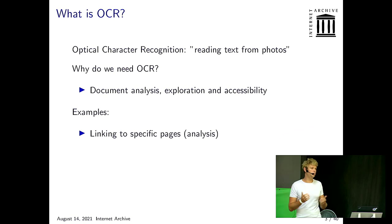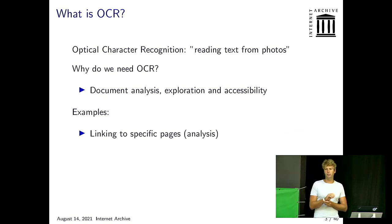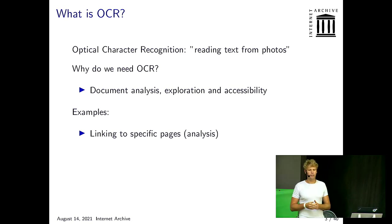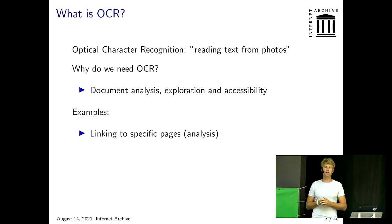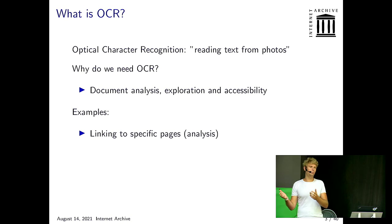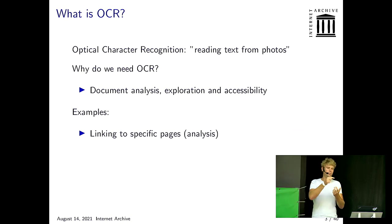It's very useful because if you upload photos somewhere, it's nice to know what is on the photo so you can find them later. We use it for document analysis, exploration, and accessibility. For example, if we digitize books at very large scale, it's nice to know what page is what page number or where a chapter starts. We can find the page number in the corner — say 42 — and link to specific pages. We do that with Wikipedia: references to a book jump to the specific page because we found that page number using OCR.